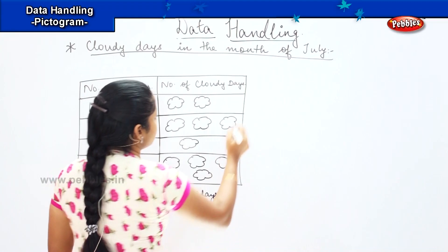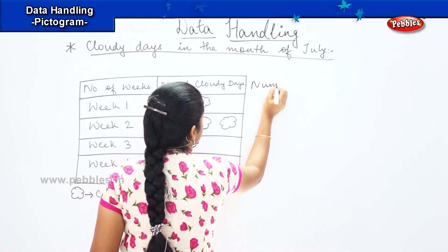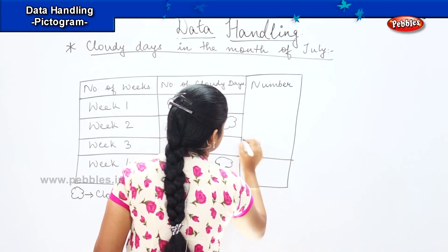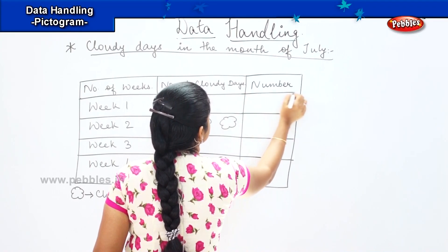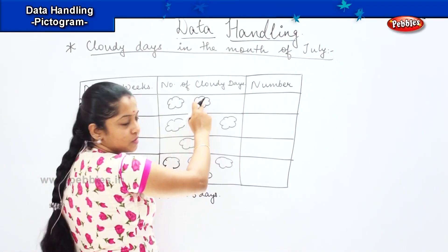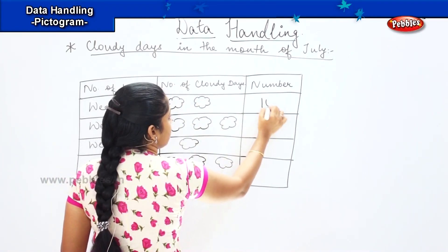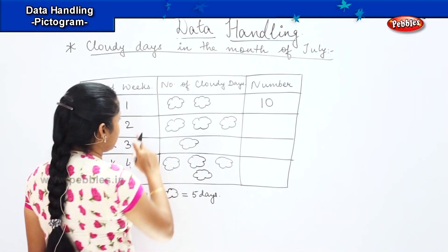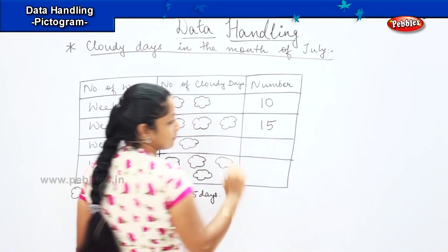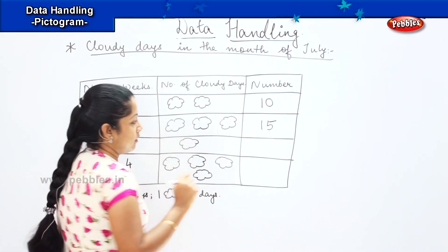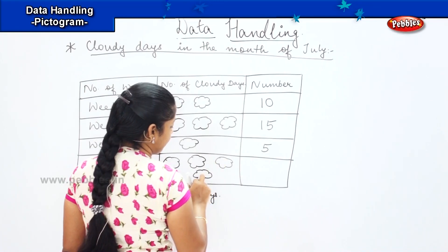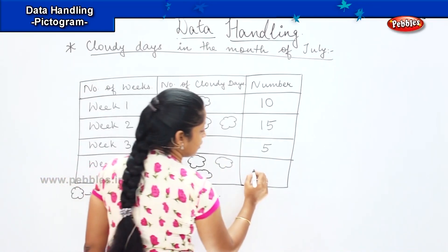I am going to write the numbers for clarity. As I said, one cloud represents five days. In week one, I have two clouds — five and ten, so that is ten. Week two has three clouds — five, ten and fifteen. Week three has only one cloud, which means five. Week four has four clouds — five, ten, fifteen and twenty.